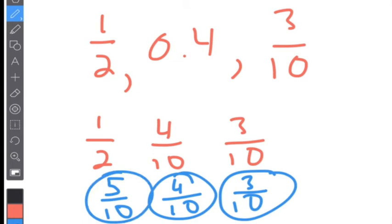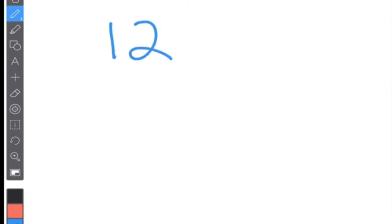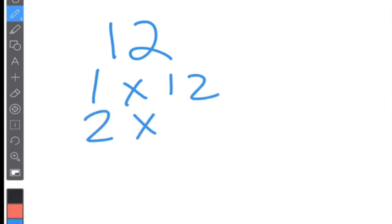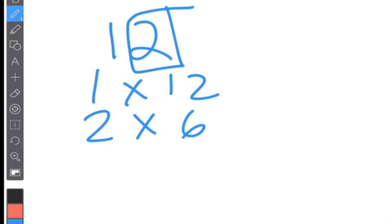Next, you're going to need to know how to figure out prime or composite. Remember, prime only has a factor of one and itself, and composite has more than one and itself. So if you look at a number like twelve, the factors are one times twelve, then two times six, and you're already done. I knew that right away because it is even and it's greater than two. Remember, two is the only even prime number.